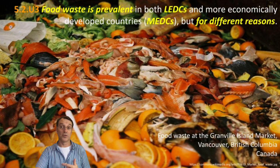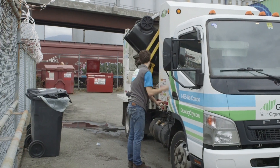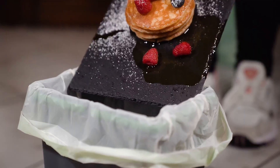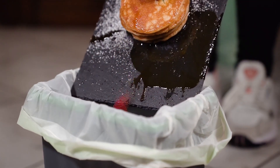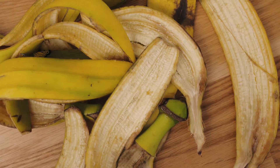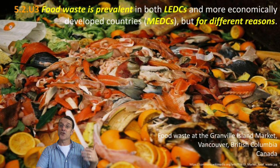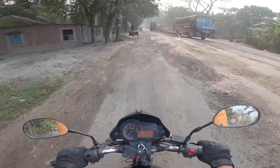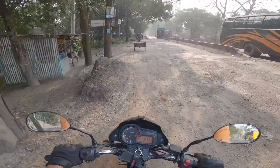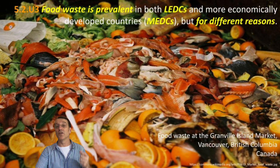Food waste is a global issue, but it looks different depending on where you are. In Vancouver, Canada, for instance, you might see perfectly good food thrown away at markets. In richer countries, we often waste food at home or in restaurants. But in poorer countries, food might spoil before it reaches consumers due to a lack of proper storage, transportation, or degraded infrastructure like roads with potholes or which wash away in rainy season or bad weather. Addressing food waste requires understanding these different patterns.